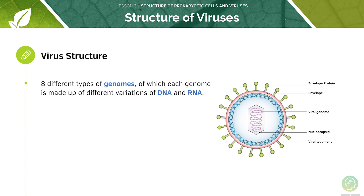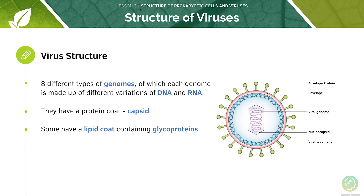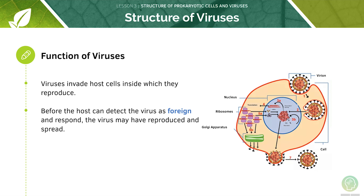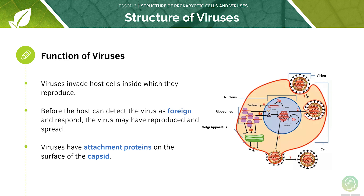Viruses carry genetic material. There are eight different types of genomes, of which each genome is made up of variations of DNA and RNA. They have a protein coat called a capsid, which protects the viral genome from the external environment. Some will have a lipid coat containing glycoproteins. Viruses will invade host cells and reproduce inside them — before the host cell detects the virus as foreign and responds to it, the virus might have already reproduced and spread. Viruses have attachment proteins on the surfaces of their capsids, which they use to bind to host cells and infect them.